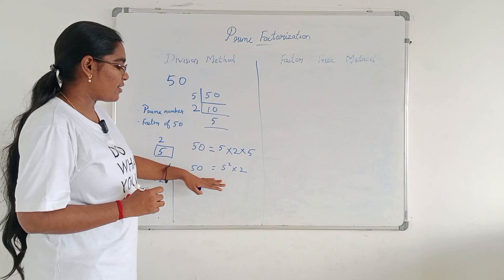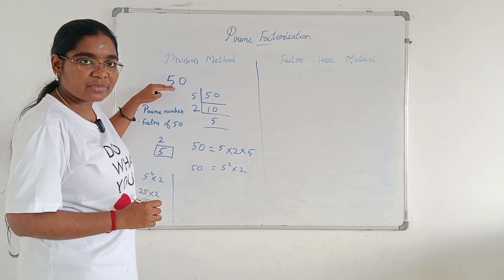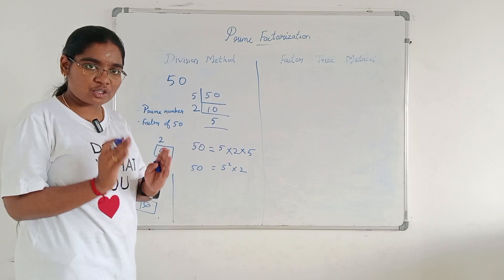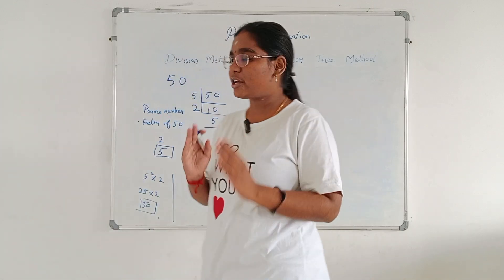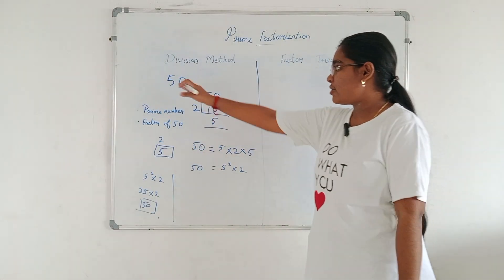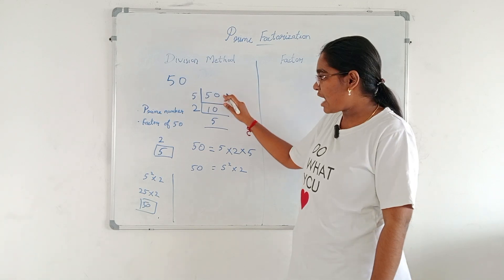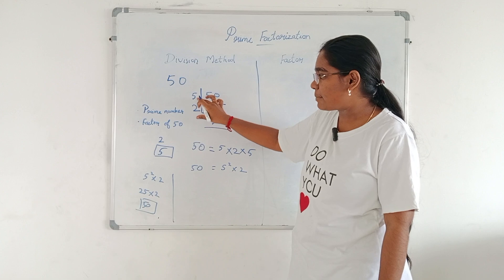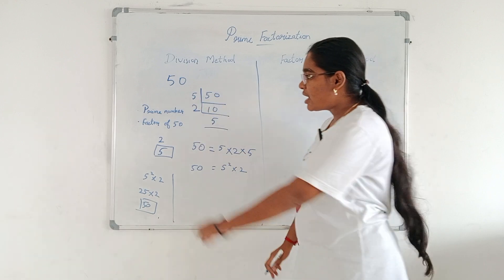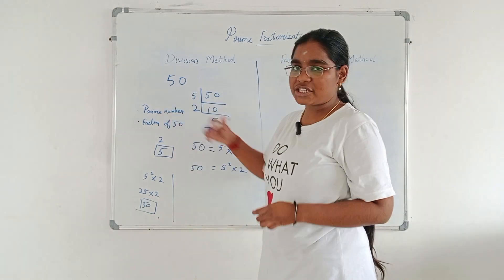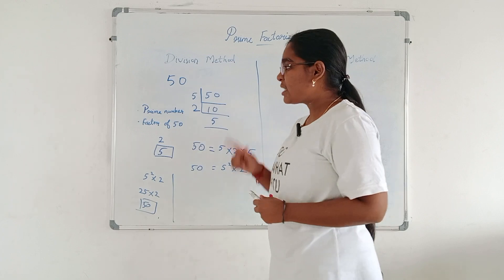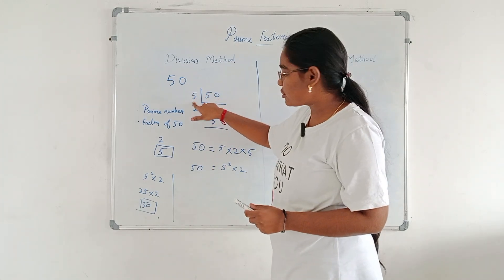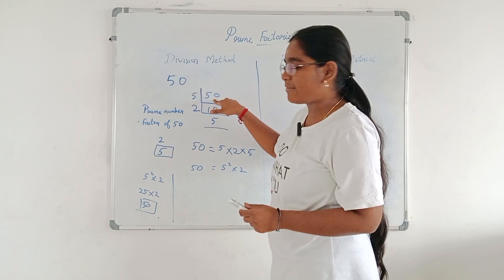Finally, we have written this 50 — the composite number — in terms of its prime factors. The concept is: first write the given number, then choose a number satisfying two conditions — it should be a prime number, and it should be a factor of the given number.